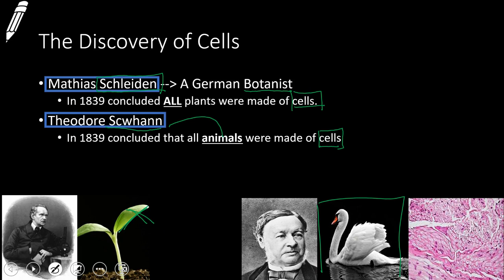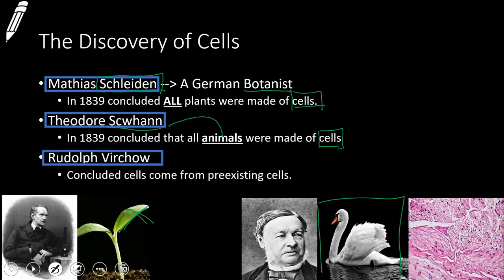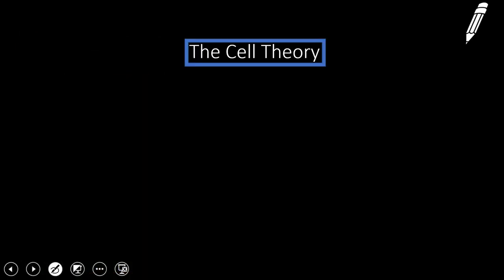Next, we have our last gentleman, Rudolf Virchow. Rudolf Virchow concluded that cells come from preexisting cells — they don't appear out of nowhere, they have to come from a parent cell. Make sure you take note of this slide and the previous one. So Anton von Leeuwenhoek and Robert Hooke were the first two to discover cells. Schleiden, Schwann, and Virchow — these three gentlemen contributed to the cell theory.